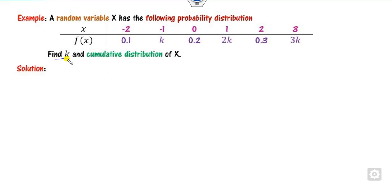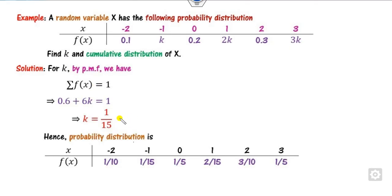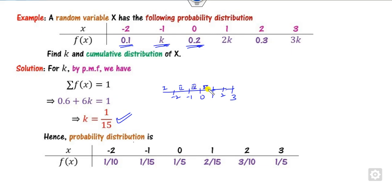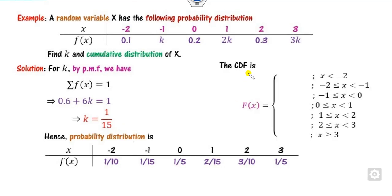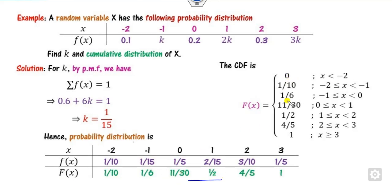In this example, you have to find the value of K and then find the cumulative distribution. Since it is a PMF, the sum of probabilities is 1, so you can find K easily. Once you substitute the value of K, you get the PMF values. The intervals are at minus 2, minus 1, 0, 1, 2, and 3, giving 7 intervals. The first value is 0 and the last is always 1. The first nonzero value corresponding to X = minus 2 is 1/10, then you add 1/15 + 1/10 and so on to get the required CDF. This is very simple for the discrete random variable, but the question is how you solve for the continuous case.